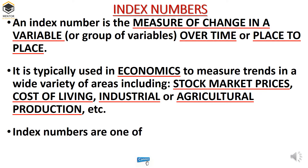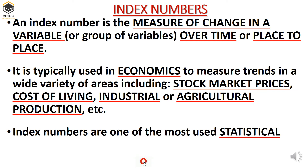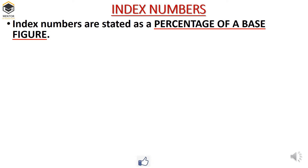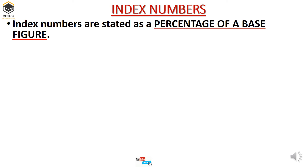Index numbers are one of the most used statistical tools in economics. We use index numbers in statistics because they show the growth of one particular society or country — it is called an economic barometer. Index number is also stated as a percentage of base figure. As shown in the example, how much percentage the production has increased — in terms of percentage, we were getting the values in index number.